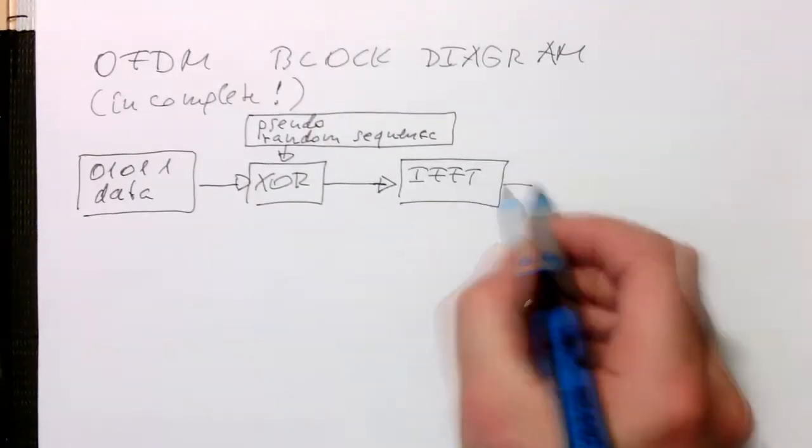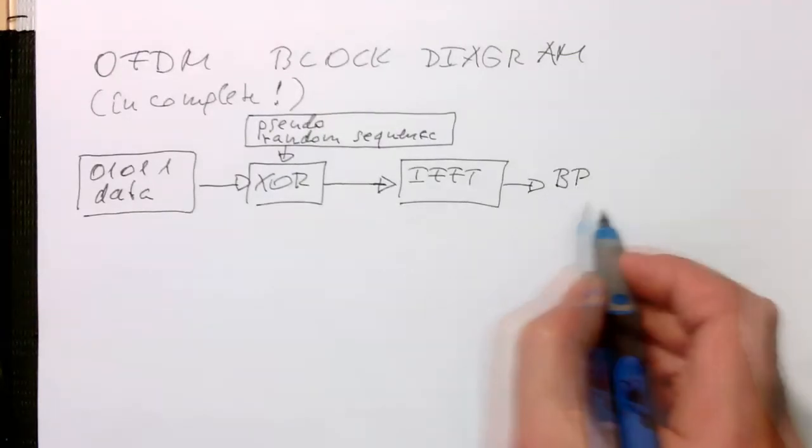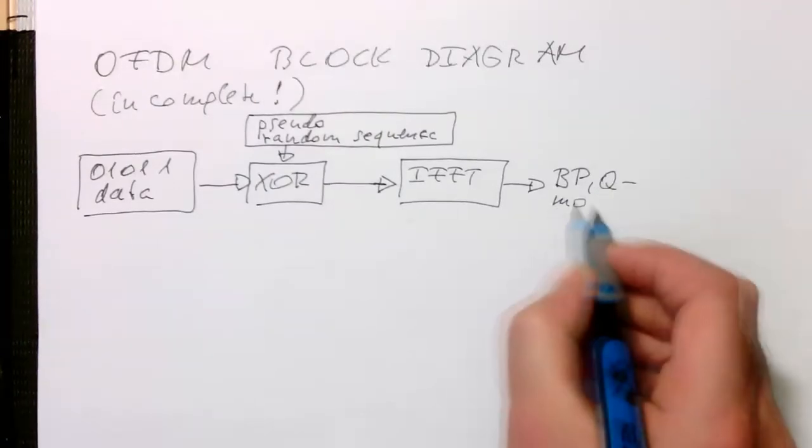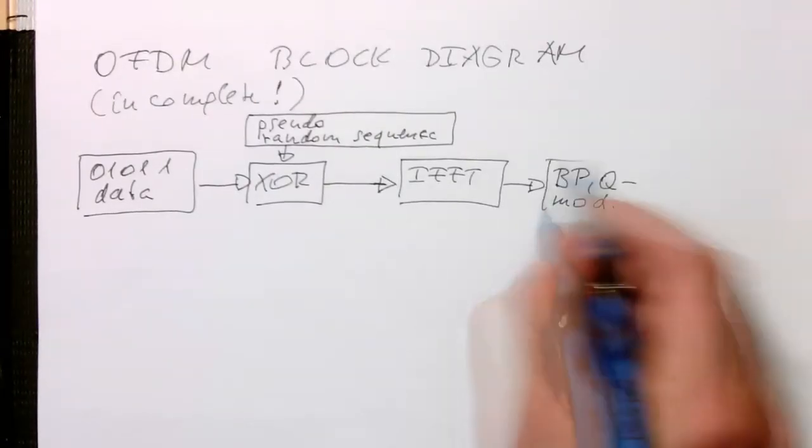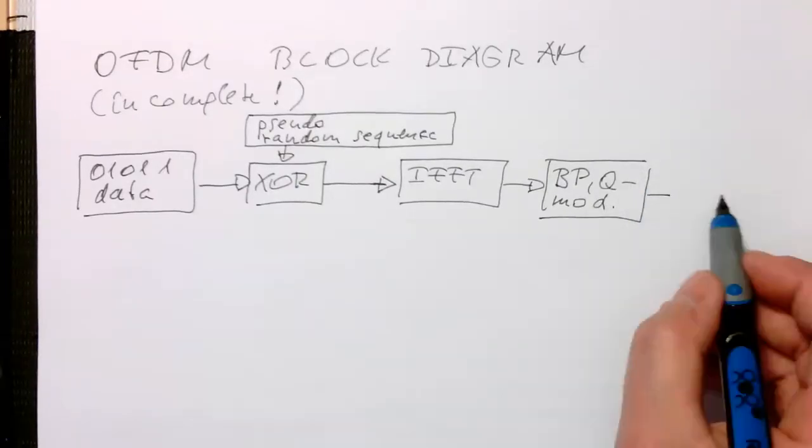Then we do our bandpass modulator, also a quadrature modulator. So our bandpass quadrature modulator. And then here we are adding our cyclic prefix.